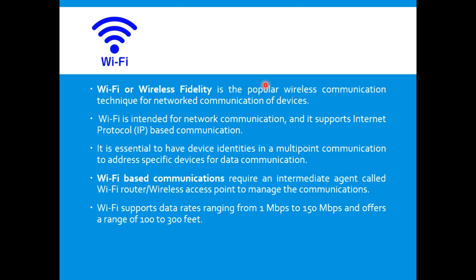Wi-Fi supports data rates ranging from 1 Mbps to 150 Mbps, though newer systems claim up to 1 Gbps. The range is typically 100 to 300 feet, which can be extended up to around 200 meters.